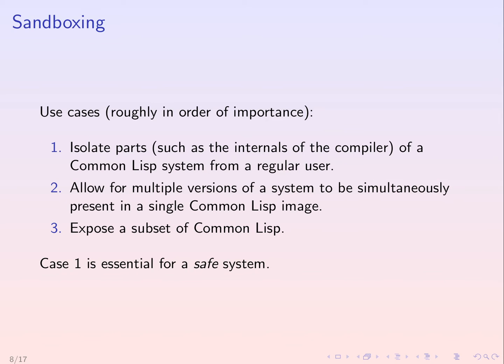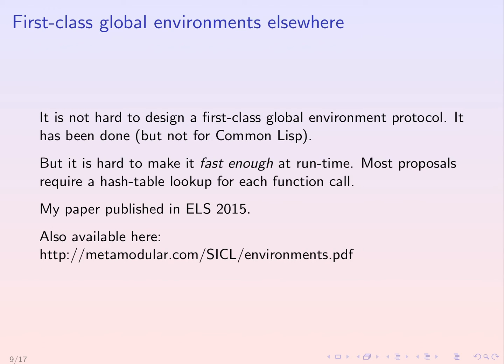I'm particularly interested in use case one, which is essential for what I call a safe system — a system that should remain internally coherent and in a consistent state. When this criterion is violated, at best the system crashes, and at worst it silently gives the wrong answer. For example, if the code generator is altered, then incorrect executable code could be generated. First-class global environments exist elsewhere and they're not particularly hard to design, but the hard part is making them fast enough at runtime. Most proposals I have seen require a hash table lookup for each function call, which would slow down function calls so much that the entire system would be unusable. My paper was published at ELS in 2015 and you can find it at the URL shown here.